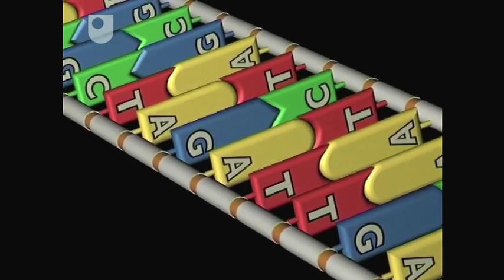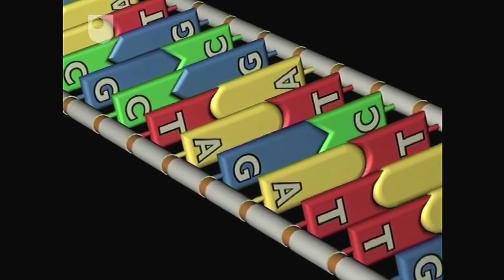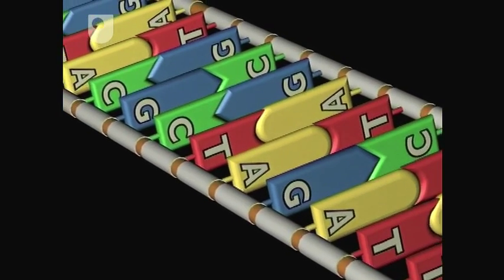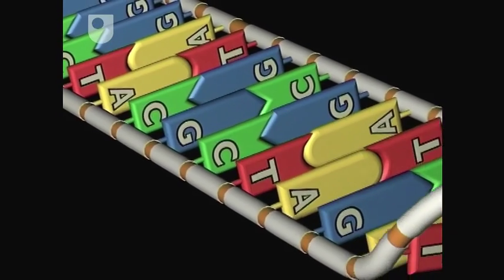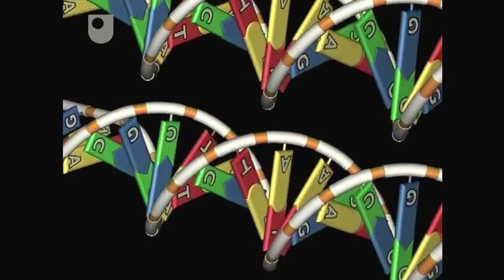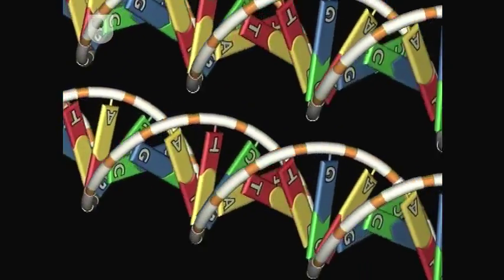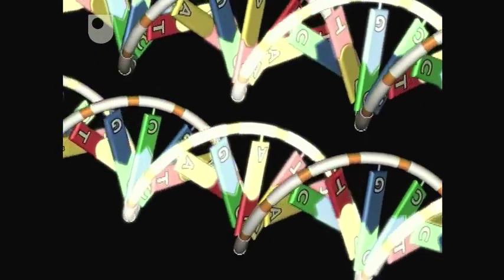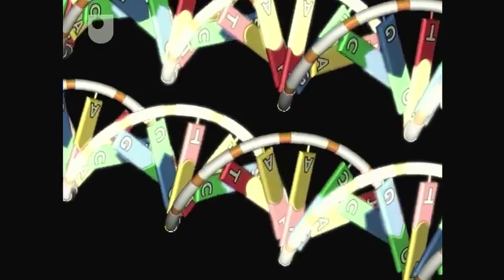So each strand of the double helix acts as a template for the formation of a new complementary strand. This eventually gives two DNA double helices, each identical to the original and actually containing one old strand and one new.